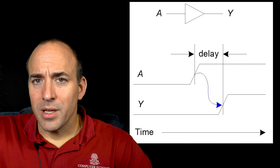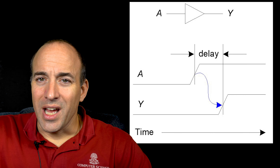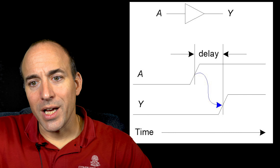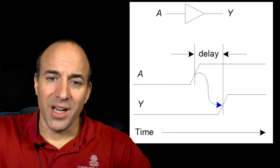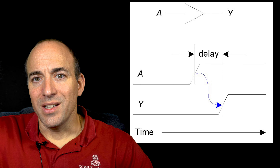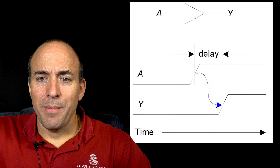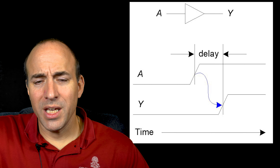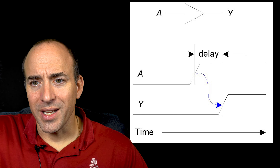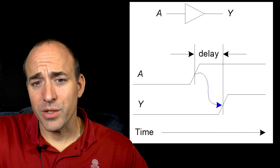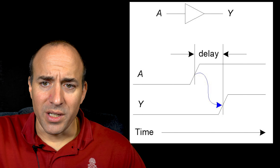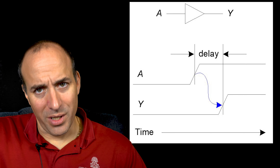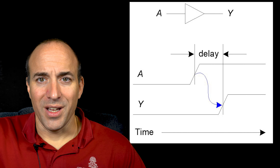Behavioral simulations like ModelSim and Verilator model gate delay as an epsilon delay, or in other words, an infinitely small non-zero amount of time, where an actual logic gate has a measurable delay which depends on the underlying physical technology. There's a delay between when the input changes to when the output changes, assuming the input changed in a way that necessitates a corresponding change in the output. You can observe this delay by changing an input that causes a change to the row on the truth table having a different output.